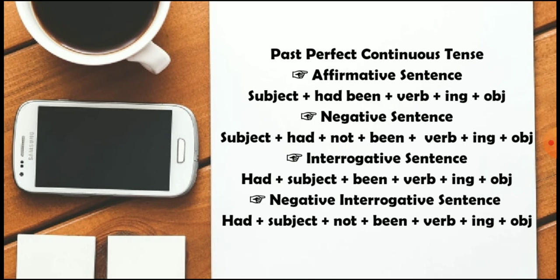For the interrogative sentence — in which we ask something to someone — we will use 'had' at the start of the sentence, plus subject, plus 'been', plus verb plus '-ing', plus object. Then comes the negative interrogative sentence: we use 'had' at the start, plus subject, plus 'not', plus 'been', plus verb plus '-ing', plus object.